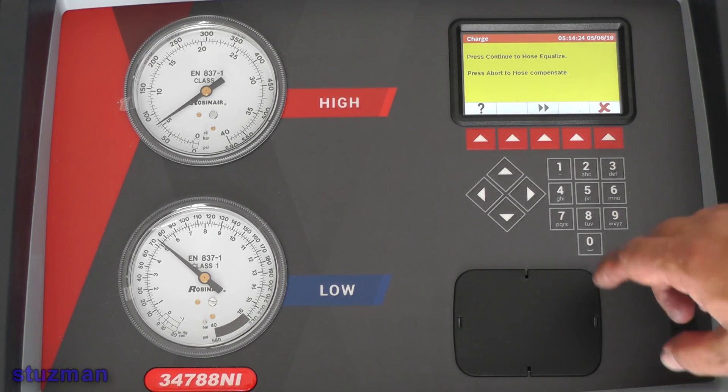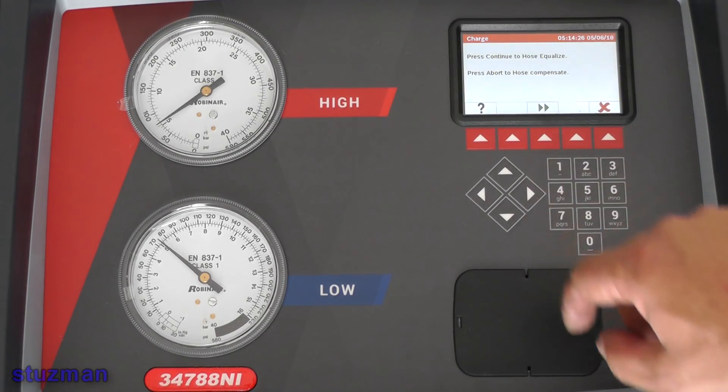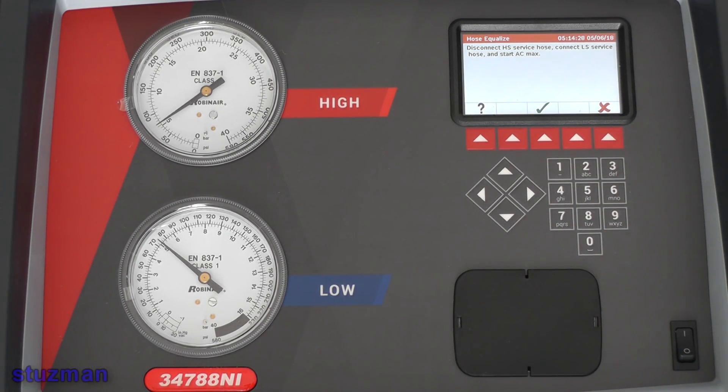So it wants to equalize the hose, so I'm going to just press to continue. Now right now it wants us to go ahead and disconnect the high pressure service line. But what I'm going to do is I'm going to go ahead and I'm going to do another pressure check. So I'm going to use the ultrasonic leak detector again and then I'm going to use a refrigerant leak detector before we crank up the engine.